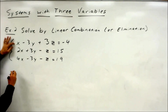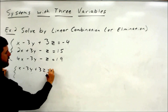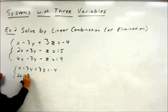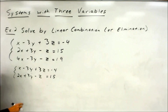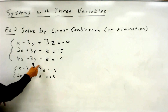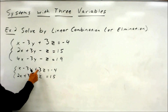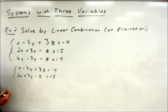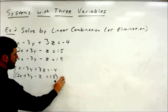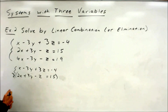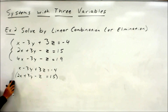So we'll take the first two: x minus 3y plus 3z equals negative 4, and 2x plus 3y minus z equals 15. I'm focusing on the z's because that's what I picked to get rid of. I've got positive 3 and negative 1 — they're opposite signs but I need opposite numbers. So how do I turn a negative 1 into a negative 3? Multiply the whole equation by 3.